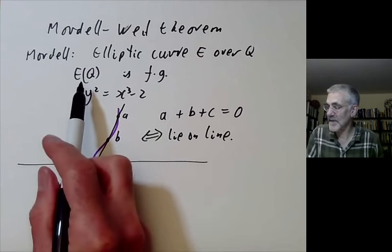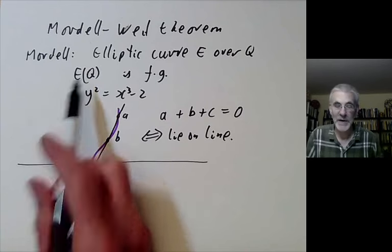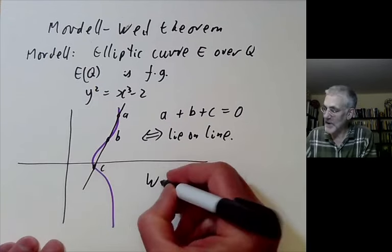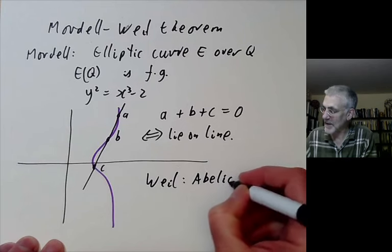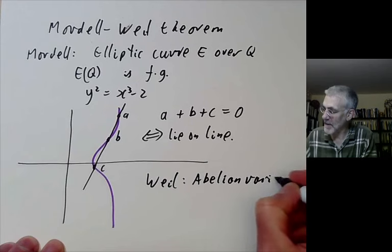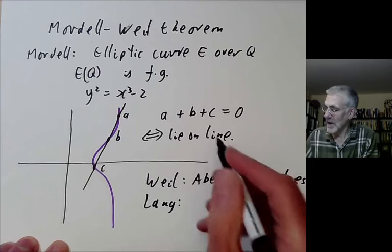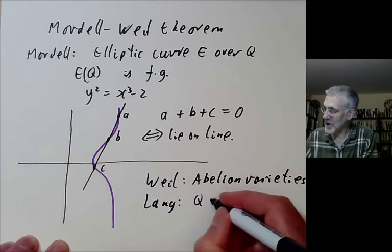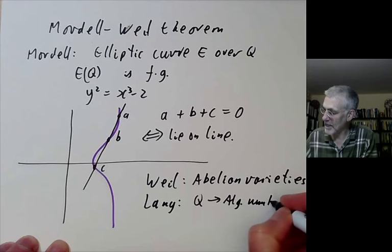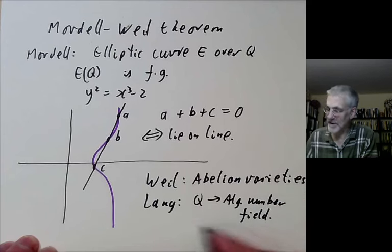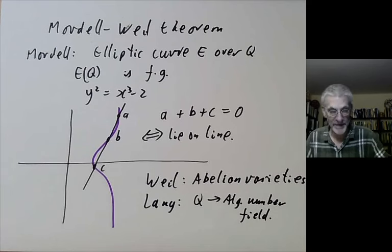Mordell proved this finite generation for the points of an elliptic curve over the rational numbers. This was generalized by André Weil, who changed elliptic curves to abelian varieties. It was extended further by Lang, who showed that you could change Q to any algebraic number field. There are also versions of this over rational function fields, but you have to be a little bit more careful about that.